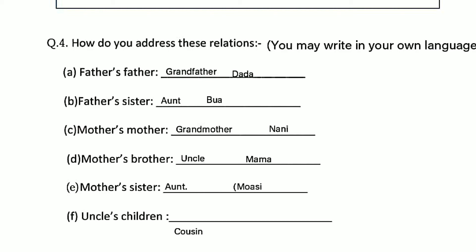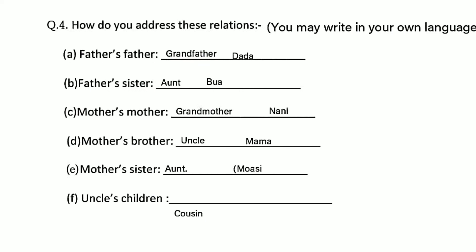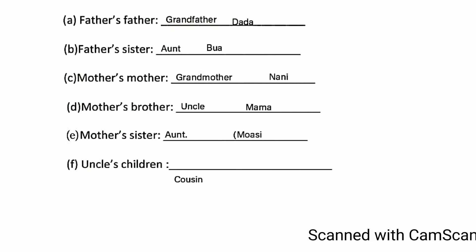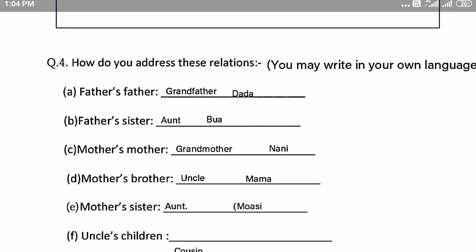Father's sister — aunt. In simple language we say 'bua' — aunt, father's sister. Mother's mother — mommy or grandma, maternal grandmother. Mother's brother — uncle, and we say 'mama.' Mother's sister — aunt, maternal aunt, you can say 'moshi.' Uncle's children — cousins. Thank you and have a good day!